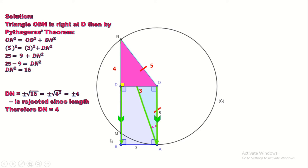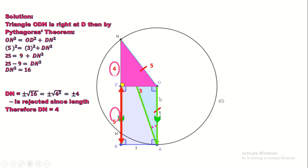Now how to find the length of BN? BN can be divided into two parts: it's BD plus DN. We have DN is 4. The opposite sides of the rectangle are equal, and OA equals 5, then BD is 5. Now we can say that BN is 5 plus 4, so it's 9.